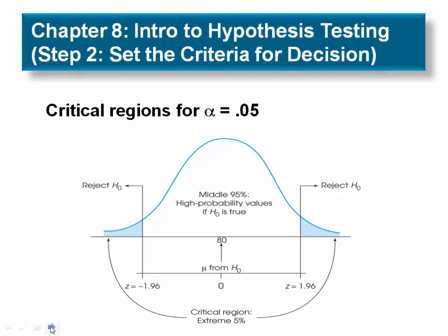This is figure 8.4, which is on page 210 in your text, and it shows the bell curve with the boundary to the critical region. Very unlikely outcomes for alpha equals .05.